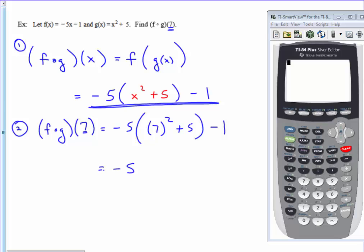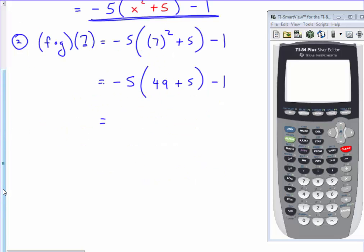The negative 5 on the outside I need to leave. The inside needs to be done first. 7 squared is 49 plus 5, and then minus 1. So we have negative 5, 49 plus 5 is 54, minus 1.